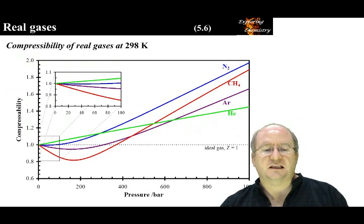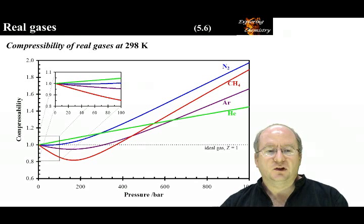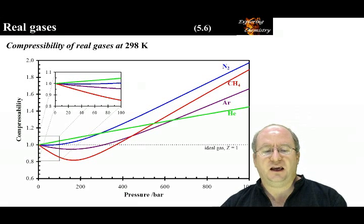This is the slide that was shown previously. Looking at this slide, A is responsible for the initial decrease in compressibility. The greater the intermolecular forces, the greater the negative deviation in the compressibility. B is responsible for the subsequent rise in compressibility. The greater the gas molecule size, the greater the change in compressibility.